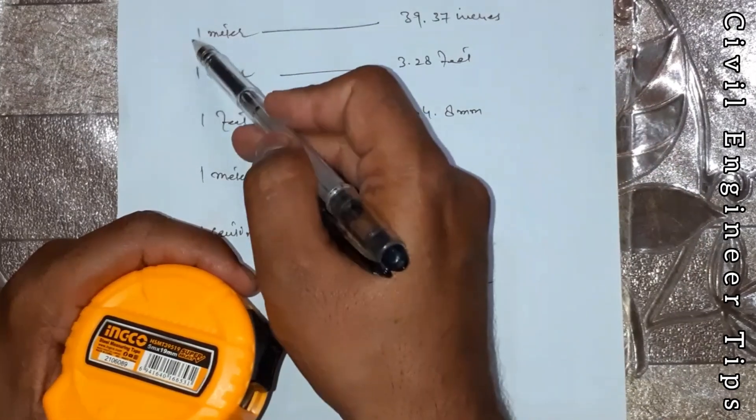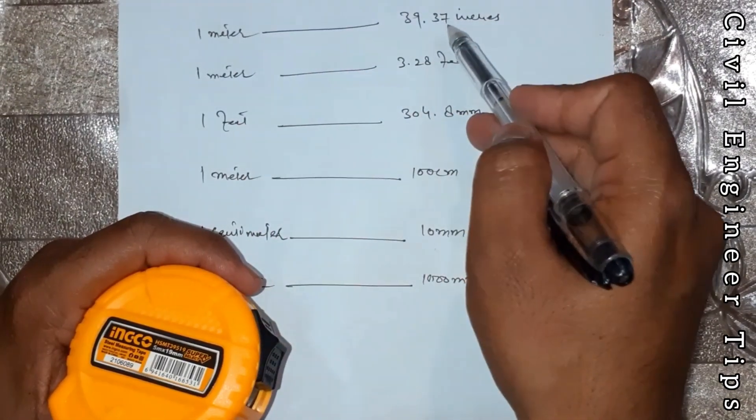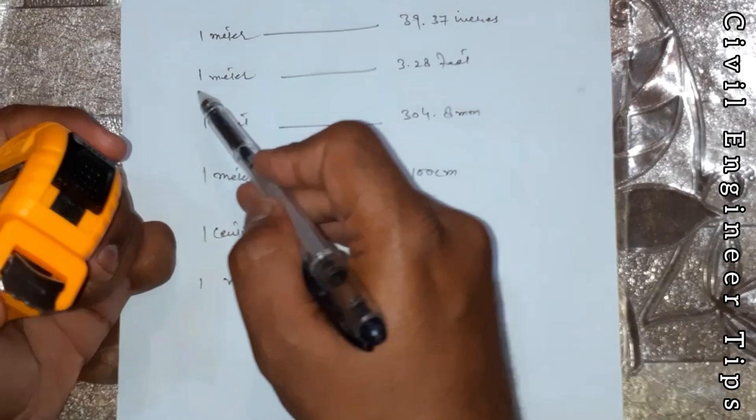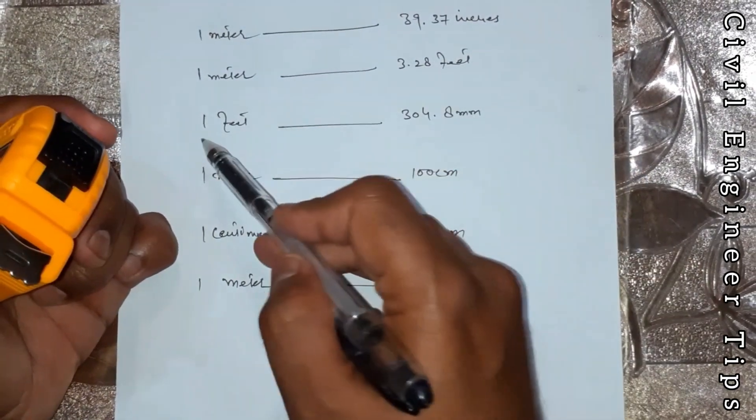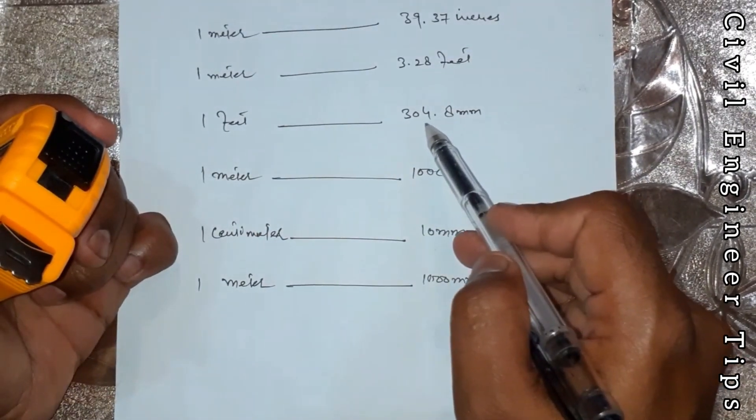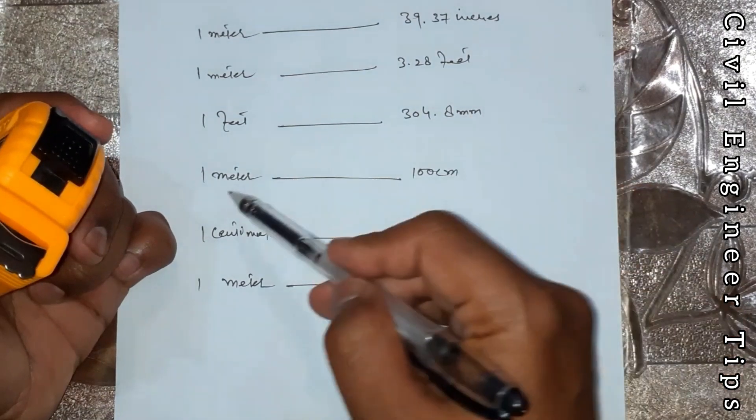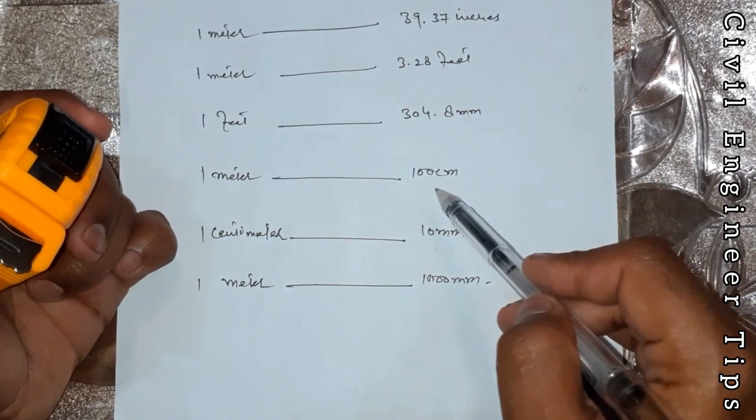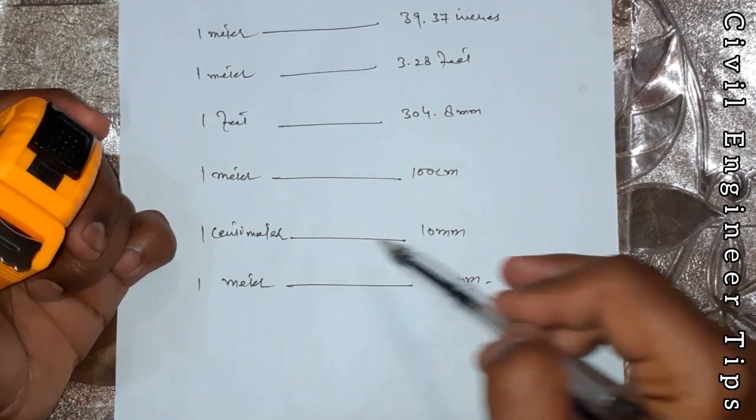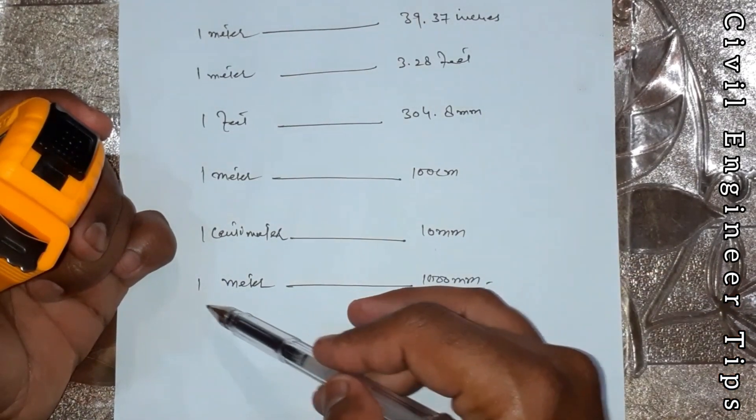304.8 millimeters, one meter is equal to 100 centimeters, one centimeter is equal to 10 millimeters, and one meter is equal to 1000 millimeters. So friends, this is a measuring tape in my hand, you can see it clearly.